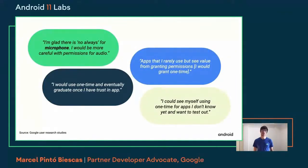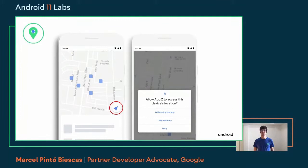But we do not do this out of the blue. Our studies indicate that permission changes are well received by users, and not only that — they are also asking for more. They want more control. We have seen users asking for some way to give only a one-time permission to the app instead of always granting it forever. So we listened and introduced what we call one-time permission, or as shown to the user, 'only this time.' That means users will be able to grant temporary access to the location permission while the app is being used. If the system detects the user is no longer using the application, the permission will be revoked, and the next time they use that feature, you will have to ask again.